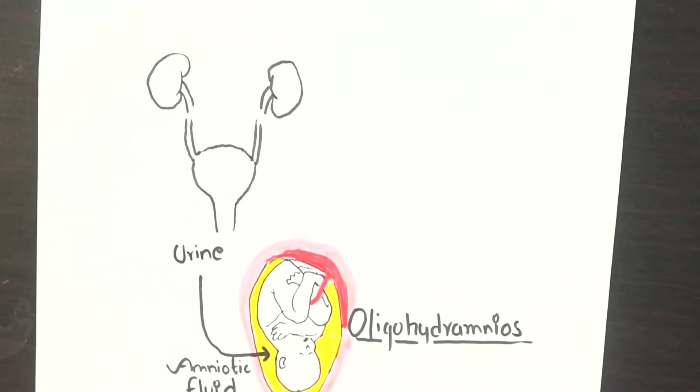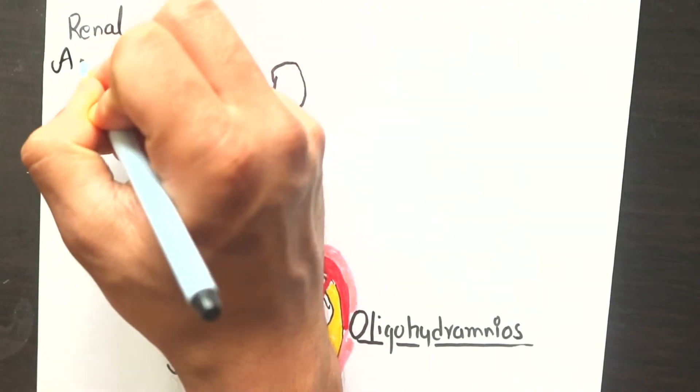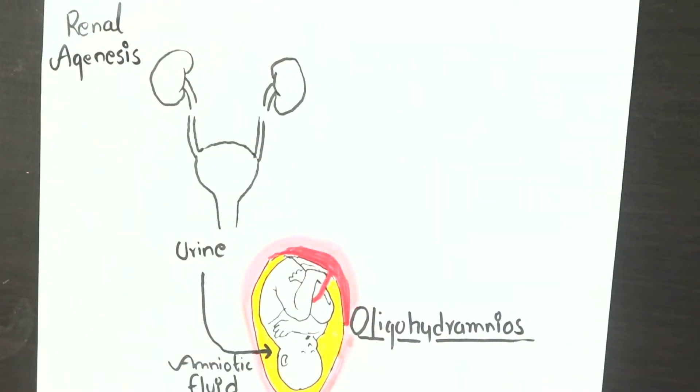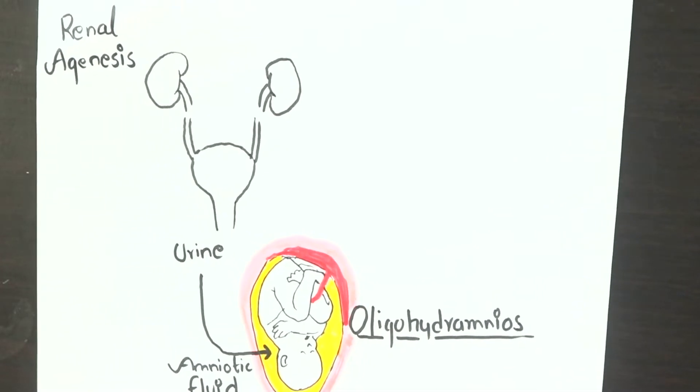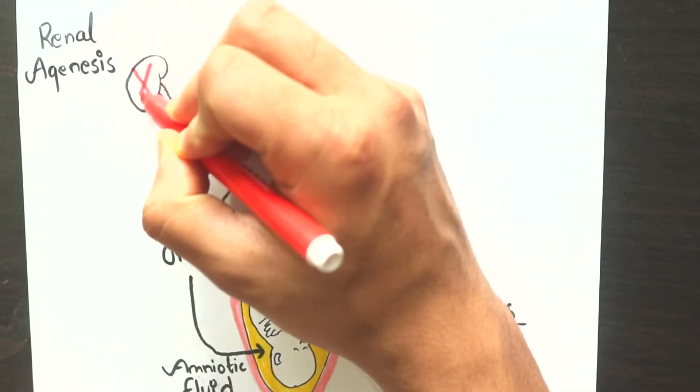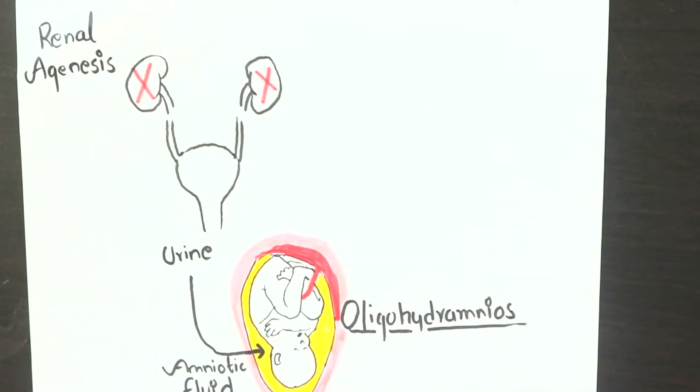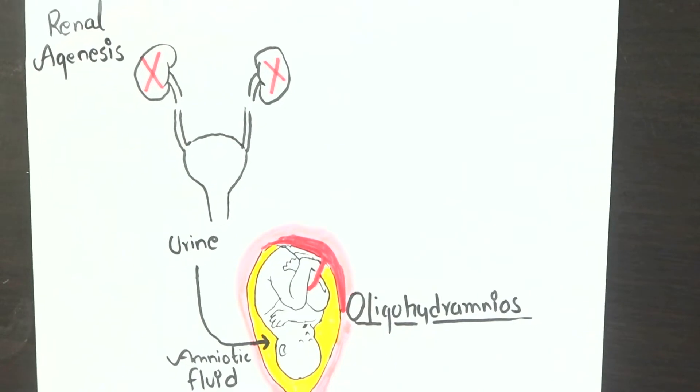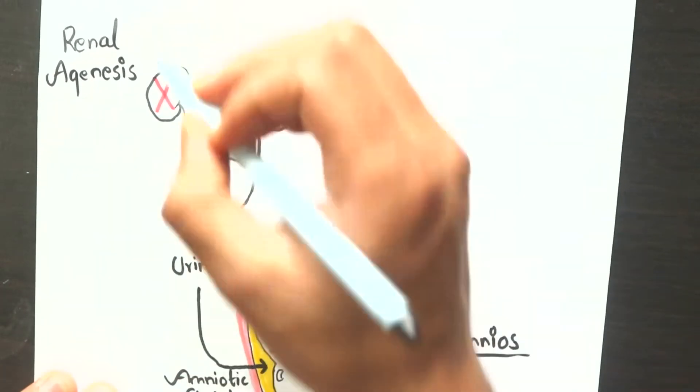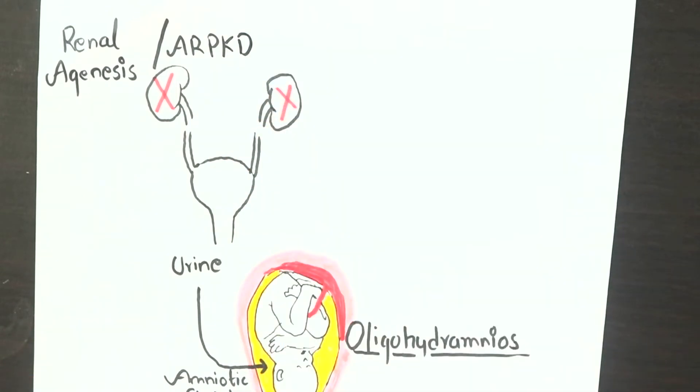But if there are developmental abnormalities such as renal agenesis, where there is absence of both kidneys, the urine formation is halted and thus the volume of amniotic fluid decreases or there is oligohydramnios. Also, other conditions such as ARPKD or autosomal recessive polycystic kidney disease can lead to renal failure and again oligohydramnios.